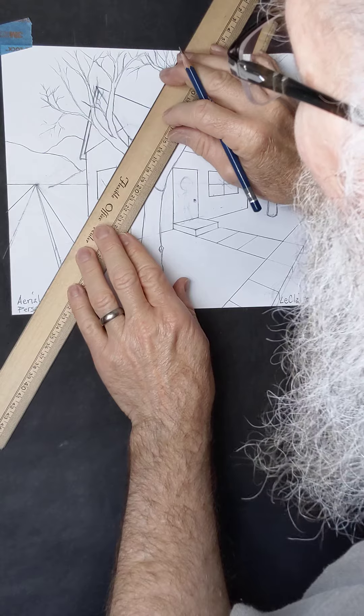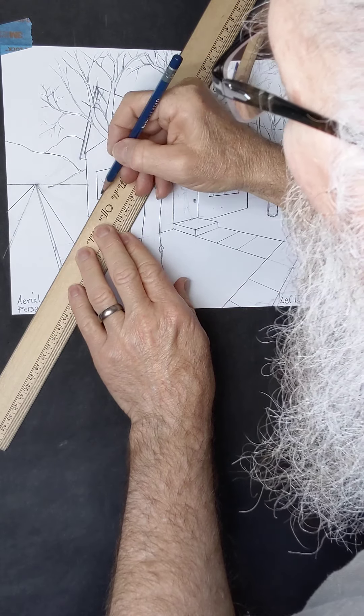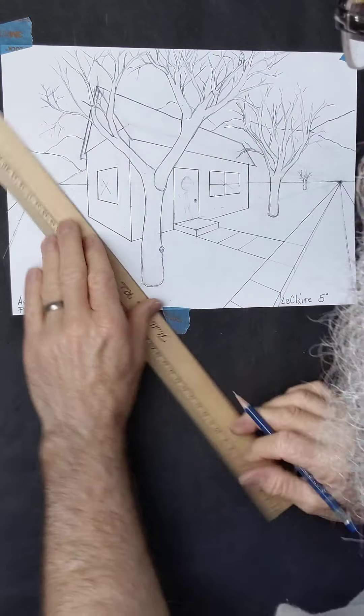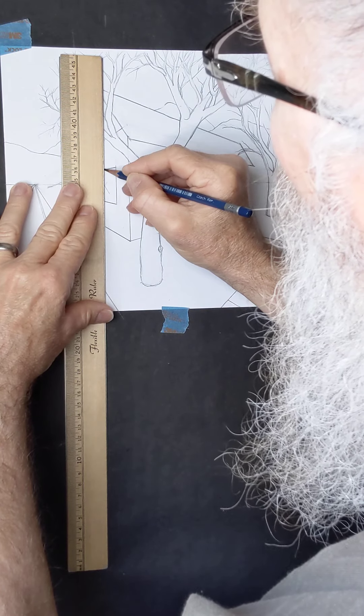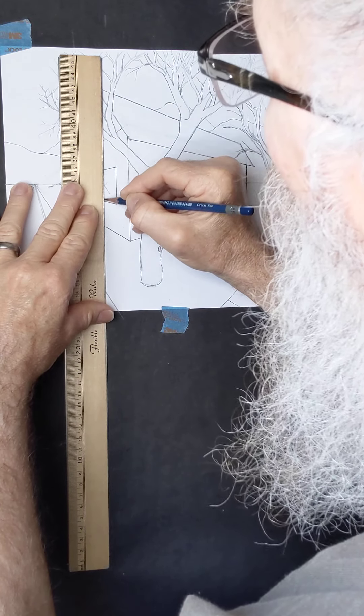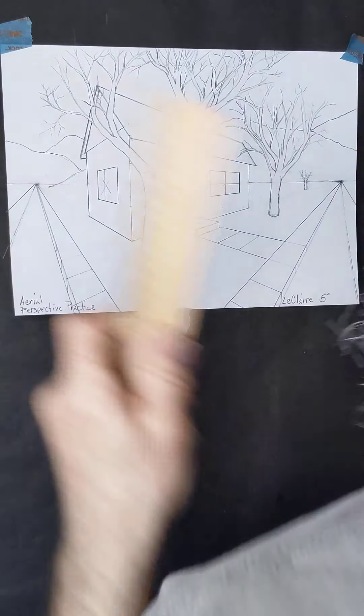And then parallel to this front edge is the window pane verticals. Whoops, I missed on that—being off just by that eighth of an inch really makes a big difference.